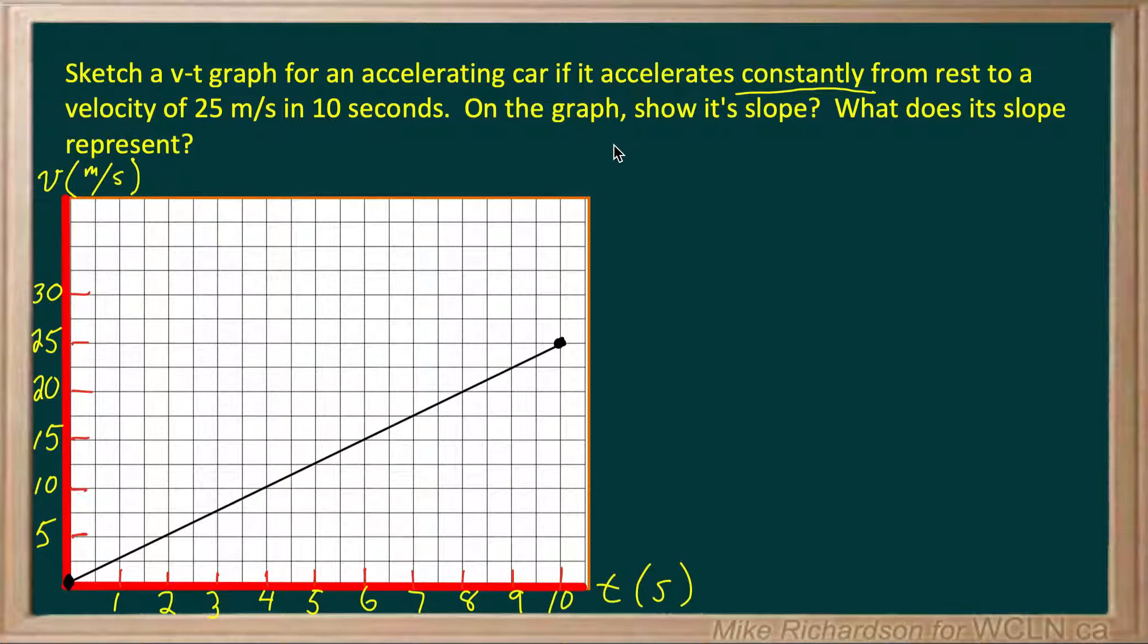Now it says on the graph show its slope. You always want to make the slope as large as possible to minimize any errors. So my rise I'm going to use as much of the graph as possible. My rise will be this length right here and my run looks like it's the entire x-axis all the way up to ten. There's my run.